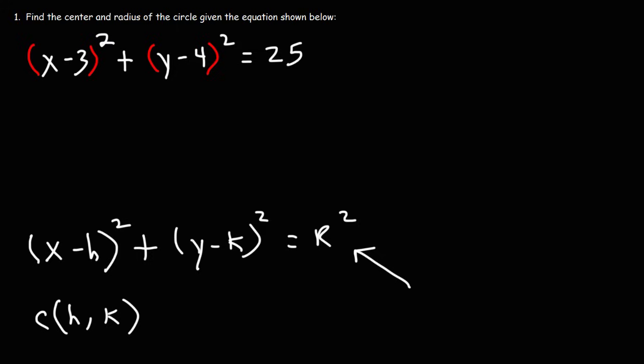So what's h and what's k in this problem? h is the number in front of x without the negative sign. So if you see a minus 3 here, reverse it. h is equal to positive 3. k is the number next to y. So we have y minus 4. We're going to switch negative 4 to positive 4. So k is 4.